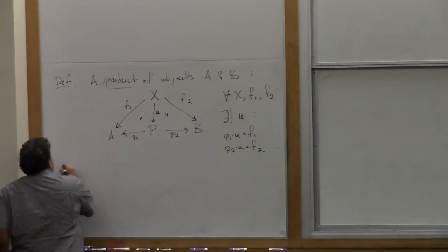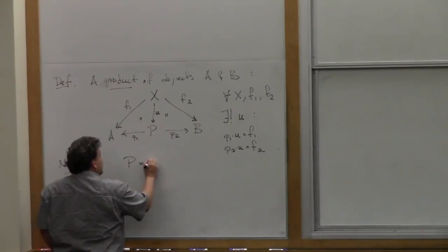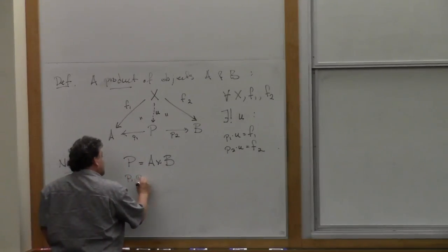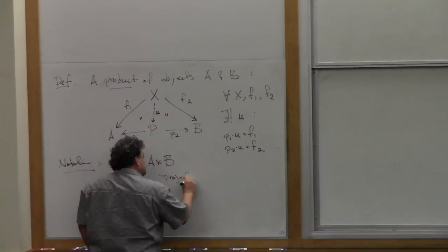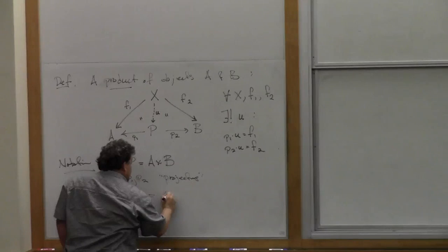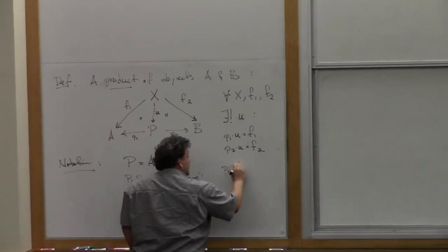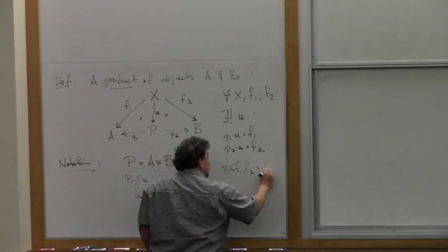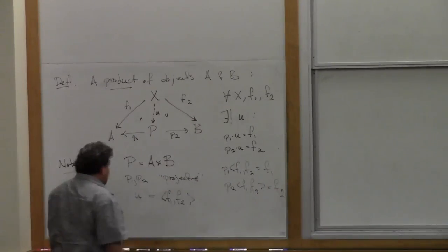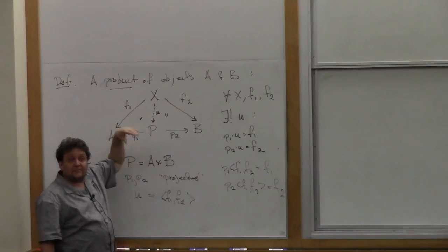Just a little bit of notation. When we have a product like that, we usually write P with the usual Cartesian product notation, and we call these things the projections — P1 and P2 are called projections. We write the unique map U determined by F1 and F2 using the pairing notation as (F1, F2), and then the equations become P1(F1, F2) = F1 and P2(F1, F2) = F2, the familiar projection equations.